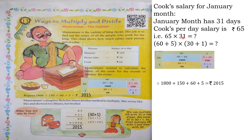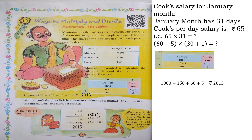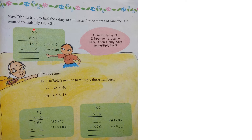In Bella's method, you only break down the last number (the multiplier). Now, Bhanu tried to find the salary of the minister for the month of January — that is 195 × 31, a three-digit by two-digit multiplication. He also followed Bella's method: he split 31 into 30 plus 1. So he multiplied 195 × 1 and 195 × 30. For multiplying by 30, Bhanu used a trick: first write a zero in the units place, and then only multiply by 3.